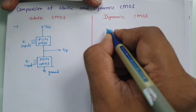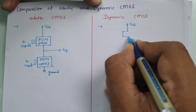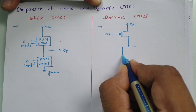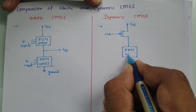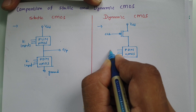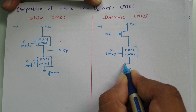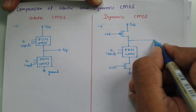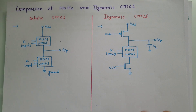When we talk about dynamic CMOS structure, here we have VDD. After that we have a PMOS with a gated clock. Then we have a pull-down network with NMOS having K inputs. After that, we have another gated clock NMOS, then ground. Here we have the output, and there can be a load capacitance CL. So these are the basic structures of static CMOS and dynamic CMOS.